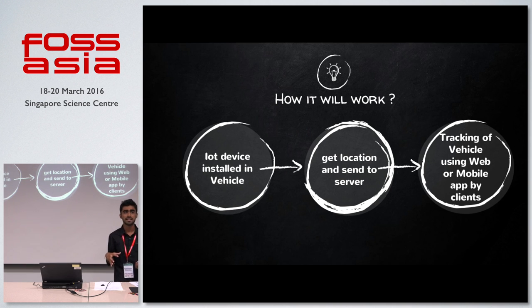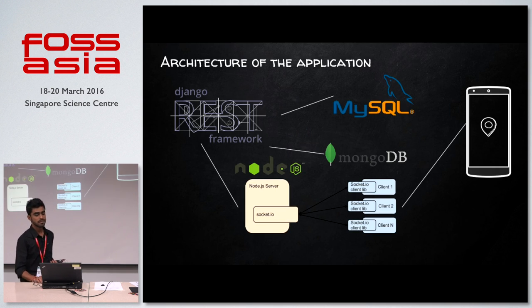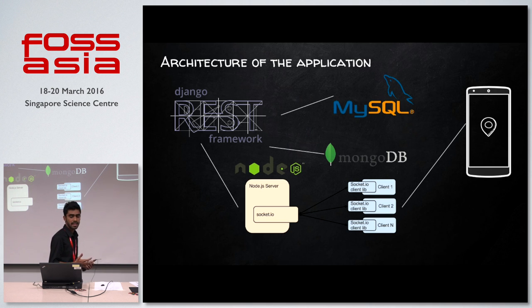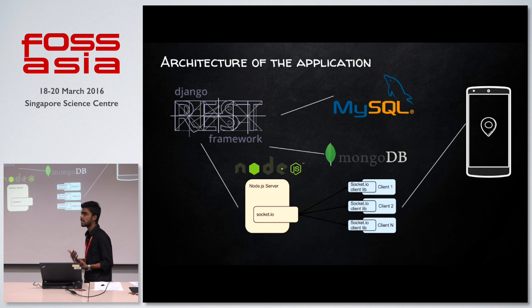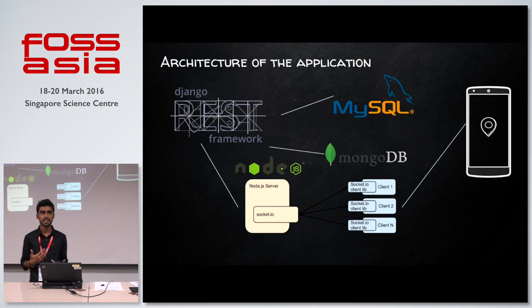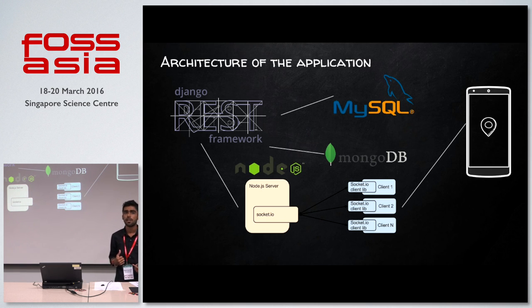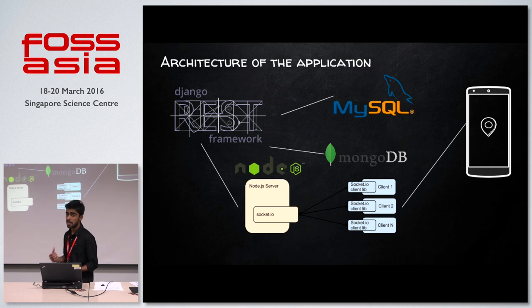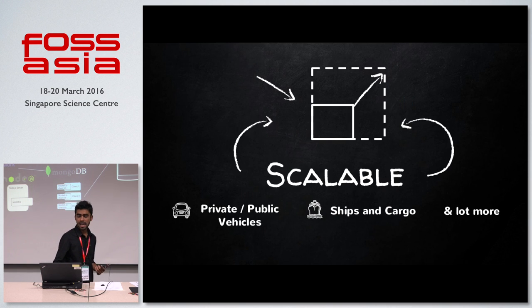A device installed in the truck will get the location using a GPS hat and send it to the main server, which you can track via a mobile or web app. The architecture uses a Django framework with a Socket.IO framework for maintaining a continuous connection with the device. We'll use a MongoDB database for storing GPS coordinates during a trip, and once the trip ends, all data is saved permanently into a MySQL database.